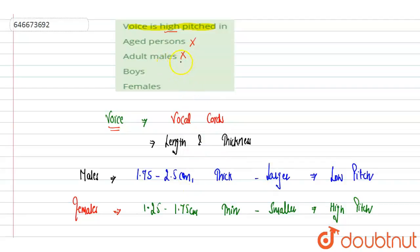But they are not having the much higher pitch than the female, so this is also incorrect. Females - yes, due to having the shorter vocal cord length, they are having the high pitch. Option D is correct.